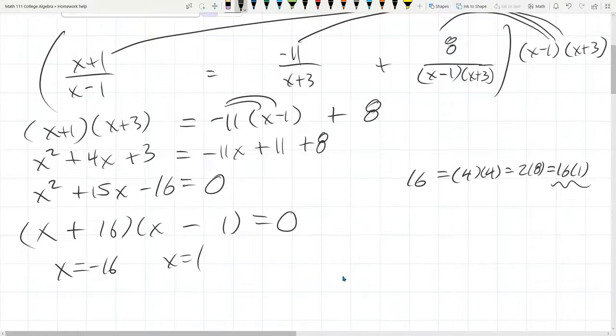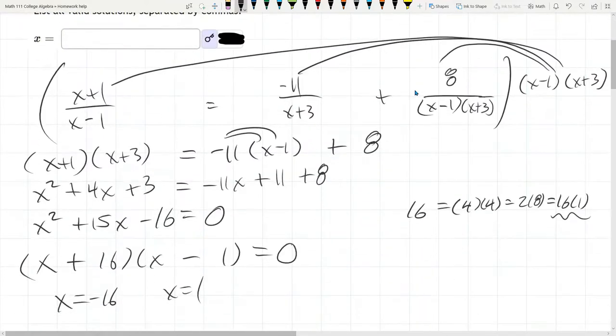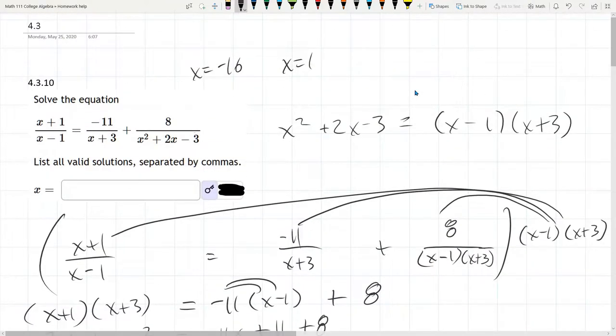However, these are two solutions to this equation. We really want to make sure they are solutions to the original equation. So I'm going to scroll up. I'm just rewriting the two solutions we had. Negative 16, positive 1.